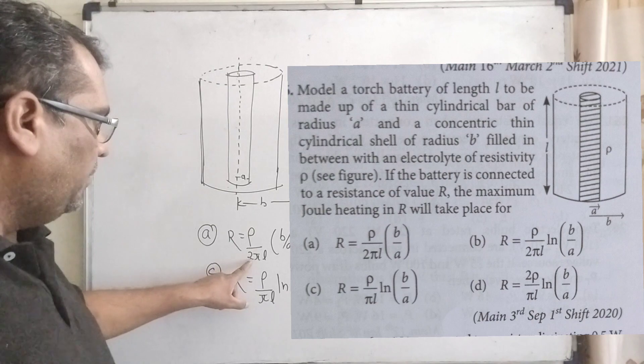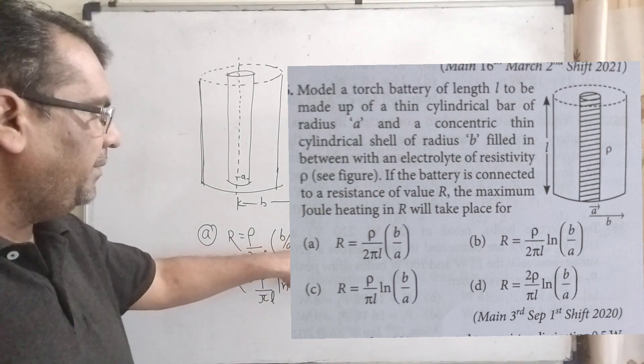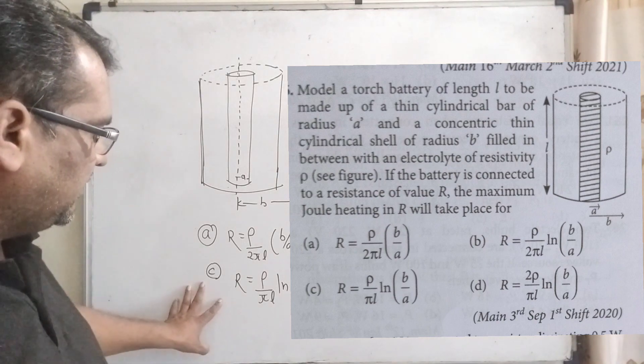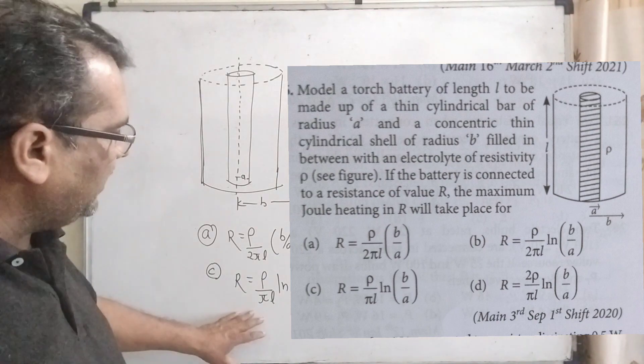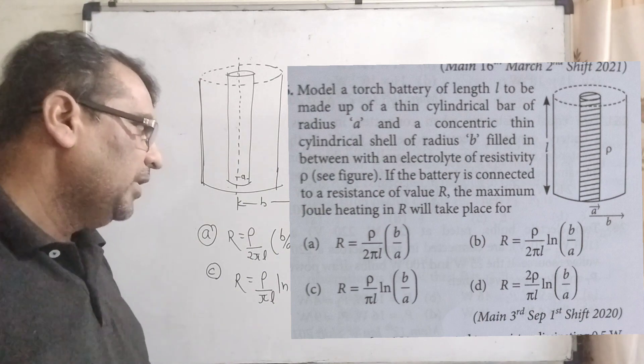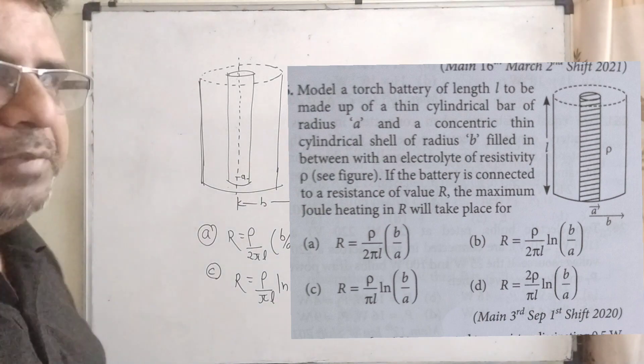Option A: R equals rho by 2πL times B by A. Option B: R equals rho by 2πL times ln(B by A). Option C: R equals rho by πL times ln(B by A). Option D: R equals 2 rho πL times ln(B by A).